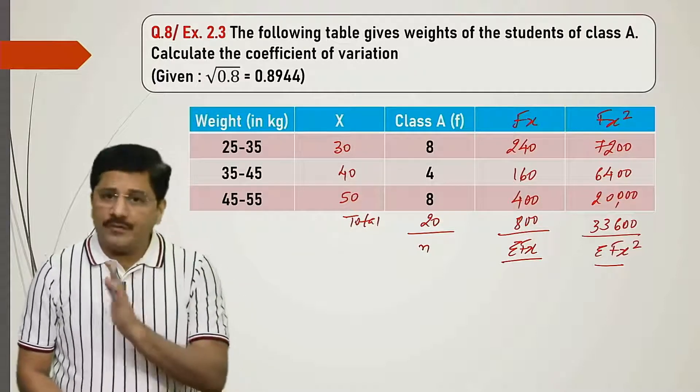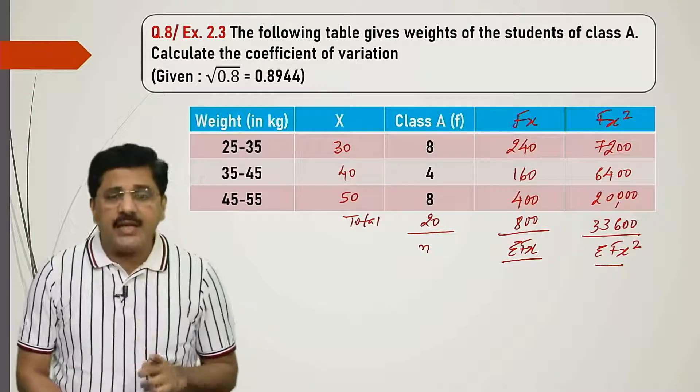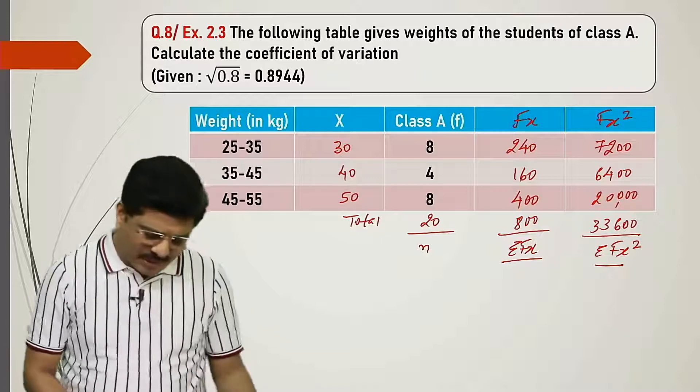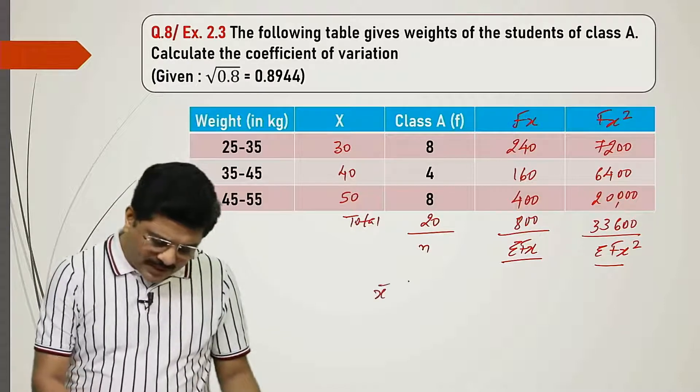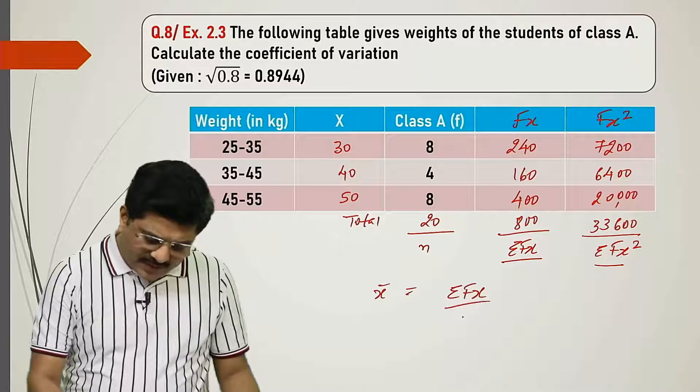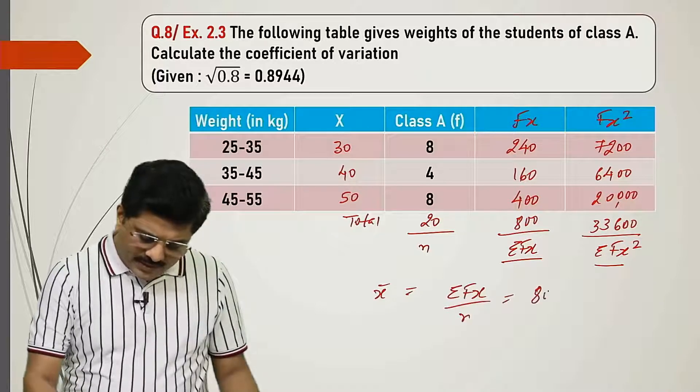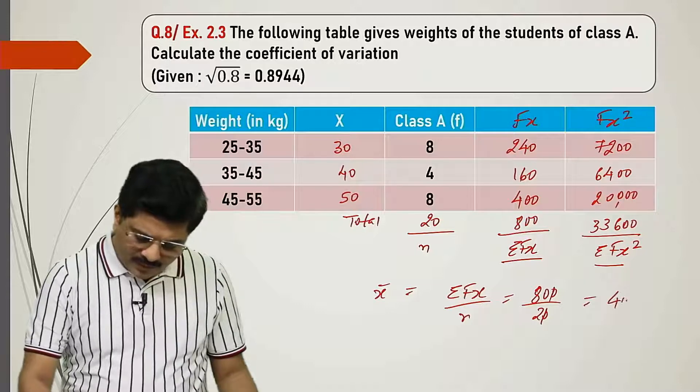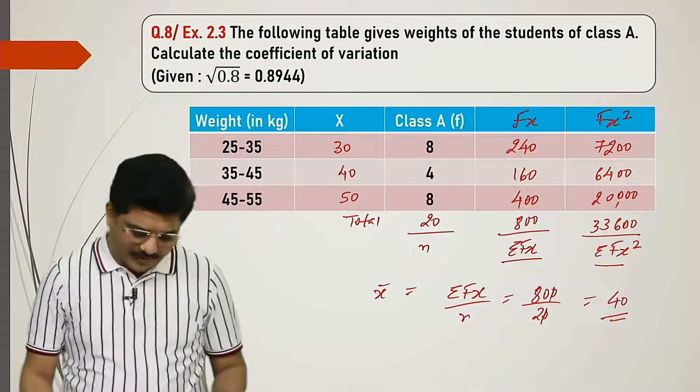What's being asked? Coefficient of variation. For CV we need two things: standard deviation and x bar. First I'll find x bar here. X bar is summation fx upon n, that is 800 upon 20. This cancels to give 40. We got x bar as 40.